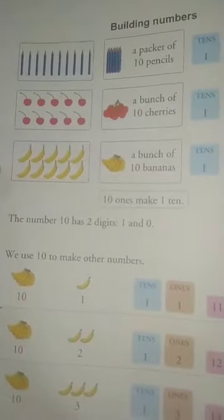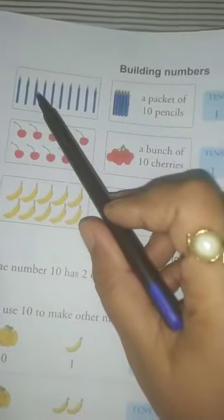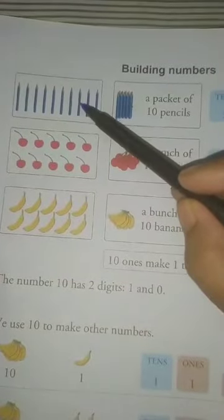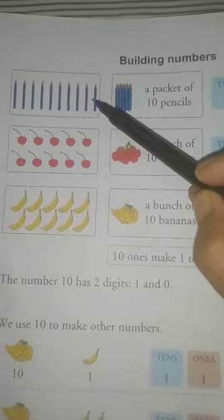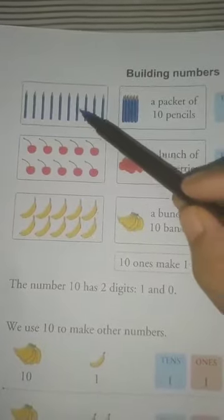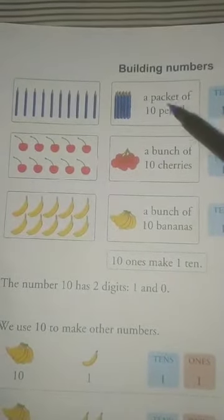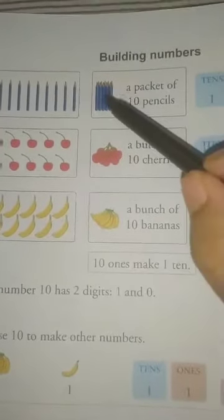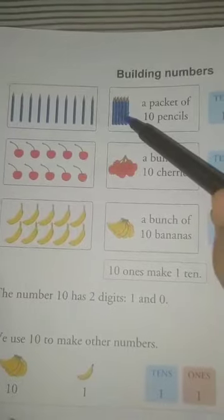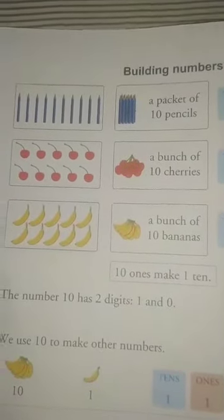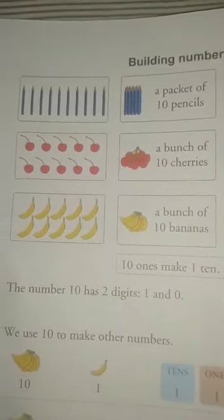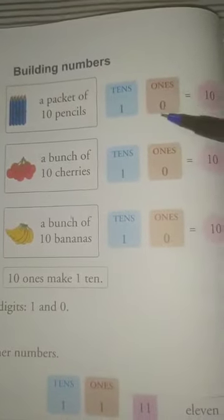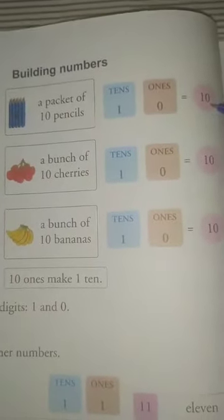Let's discuss it again. How many pencils are there? Let's count: 1, 2, 3, 4, 5, 6, 7, 8, 9, 10. There are 10 pencils — a packet of 10 pencils. This is a packet of 10 pencils, which means 1 tens and 0 ones. 1 tens and 0 ones is equal to 10.